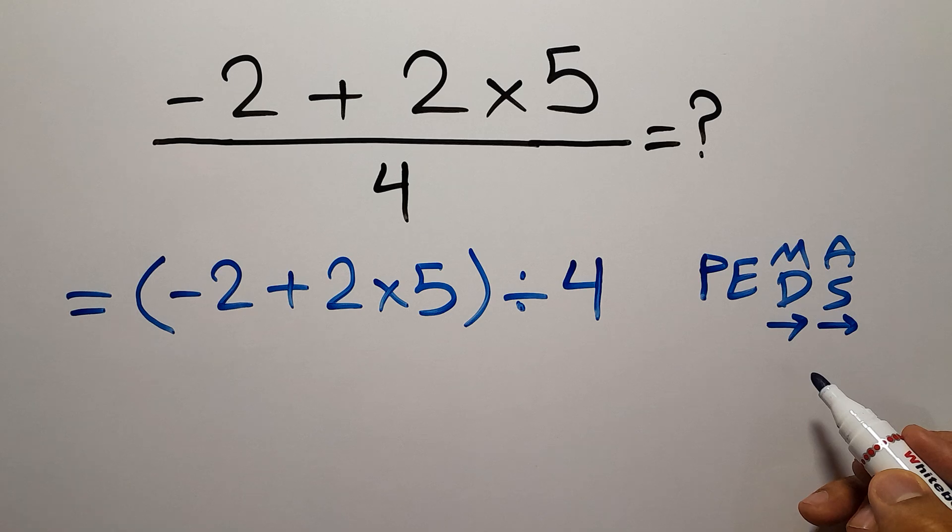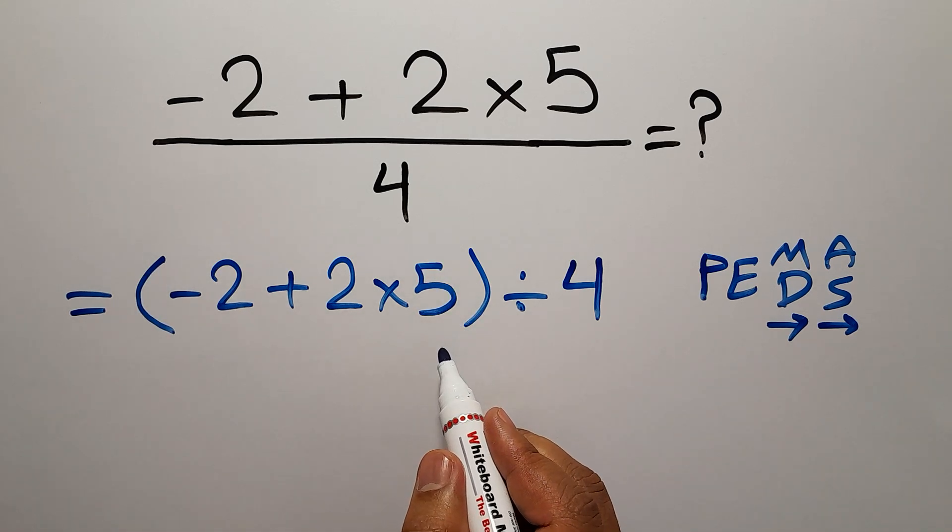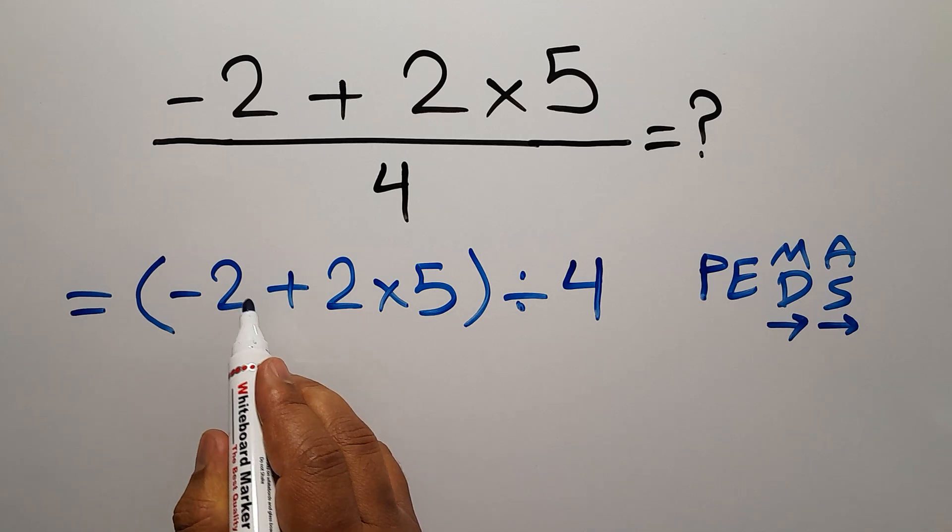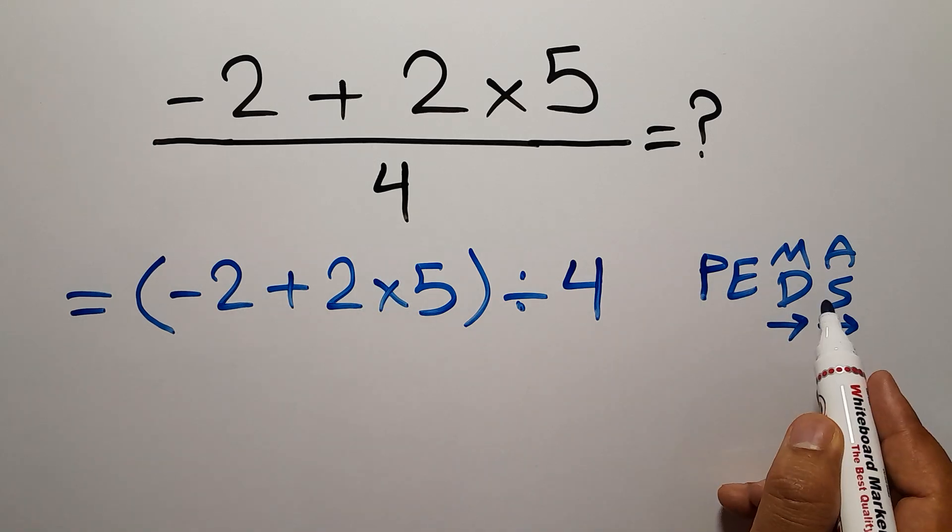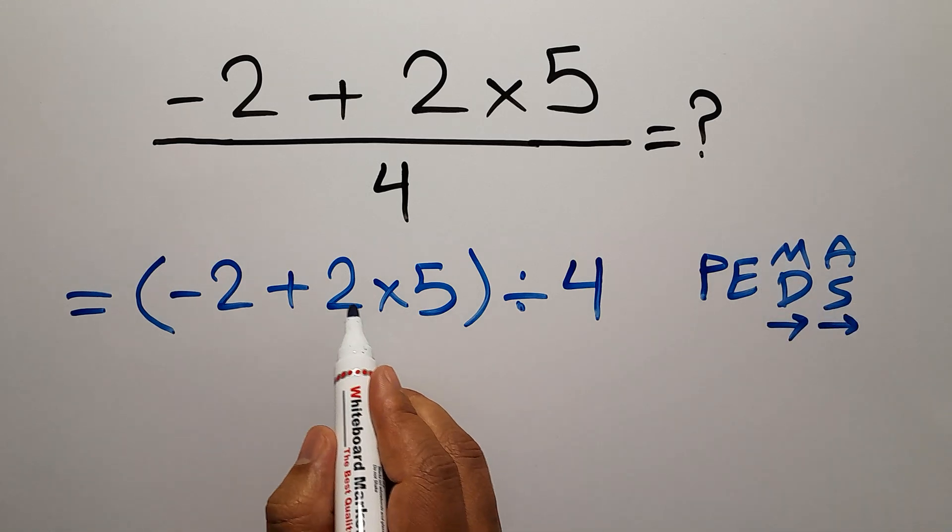So here, first we have to do this parentheses. Inside this parentheses we have one addition and one multiplication. In PEMDAS, multiplication comes before subtraction, so first we have to do this multiplication: 2 times 5.